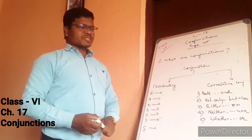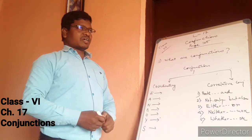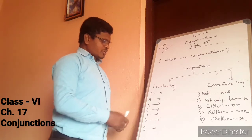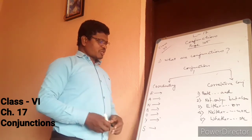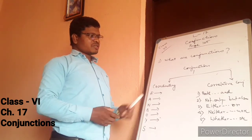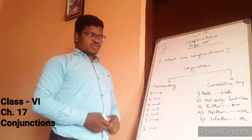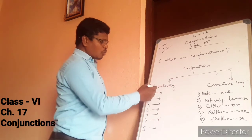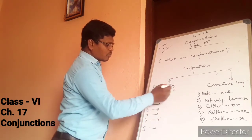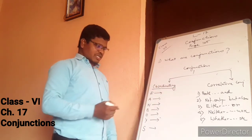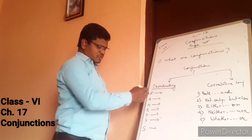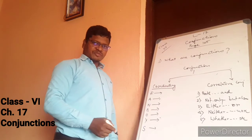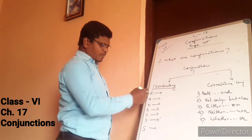I have divided conjunctions into two types. The first one is co-ordinating conjunctions, and the other is co-relative conjunctions. What are co-ordinating conjunctions? Here you can see the short form, which is known to you.